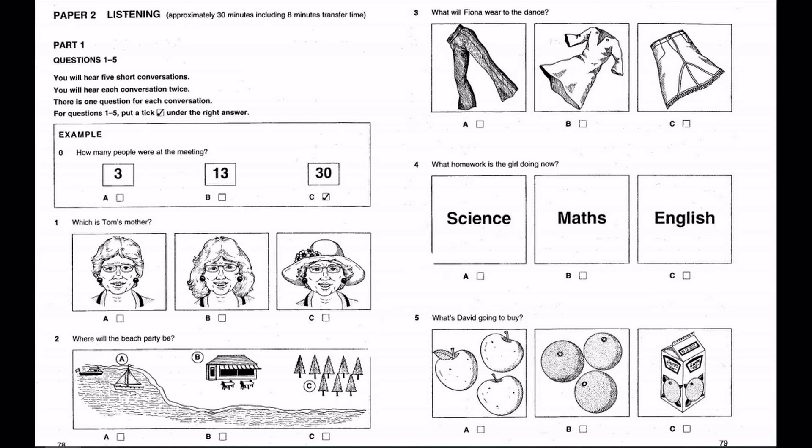Five. What's David going to buy? I'm just going to the shops, Mum. Do you need anything? Yes. Get some fruit, will you? Some green cooking apples and some oranges to make juice with. Well, we already have lots of oranges. Okay. Just some apples, then. I'll make the juice when you get back.